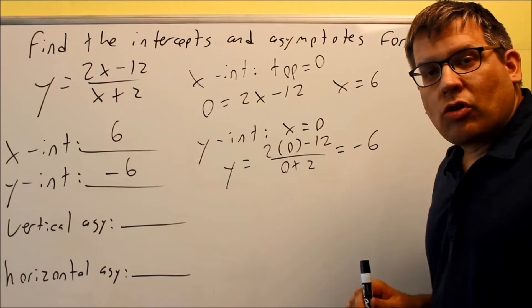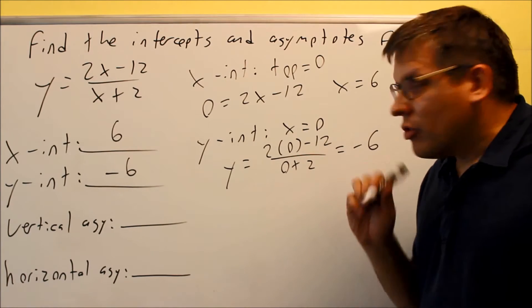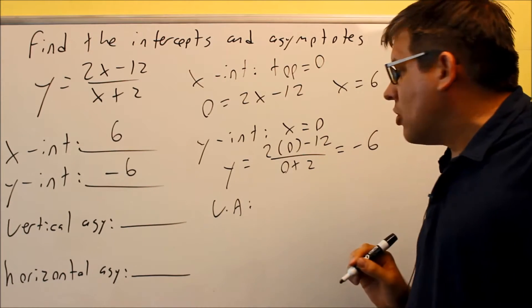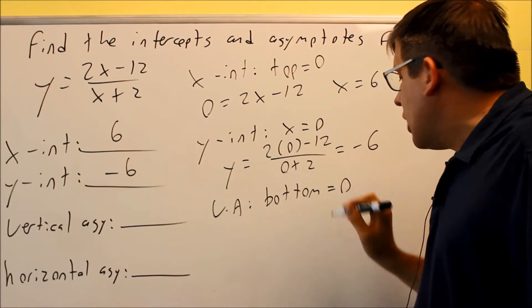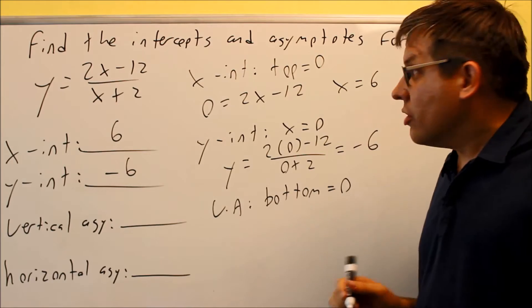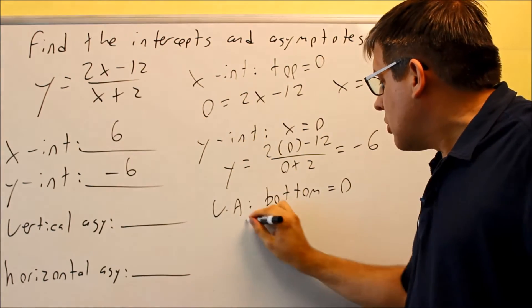Next, I want to find my vertical and horizontal asymptotes. So if you look at the notes for the VA, the vertical asymptote, the rule is you want to take the bottom one, and you're going to set the bottom one equal to 0.